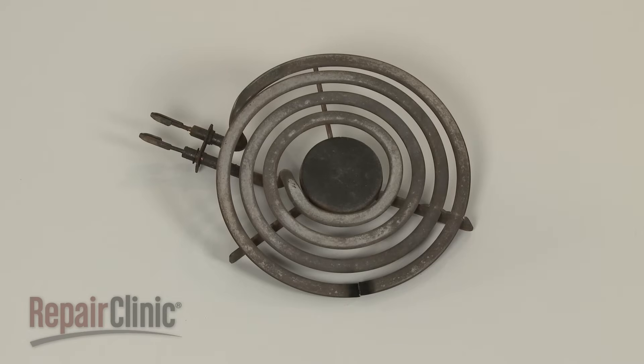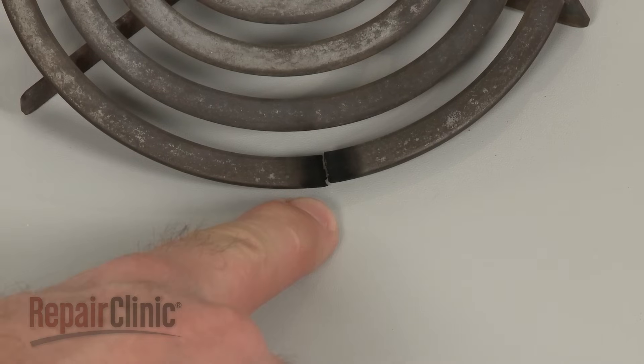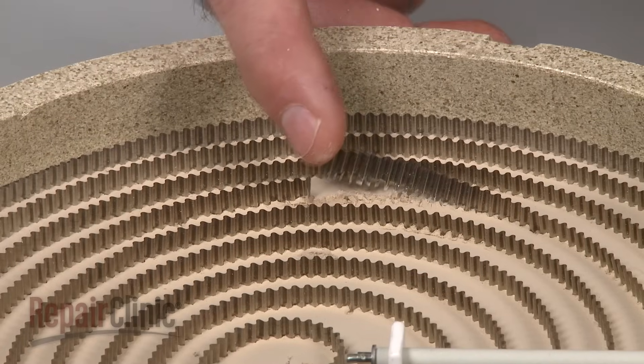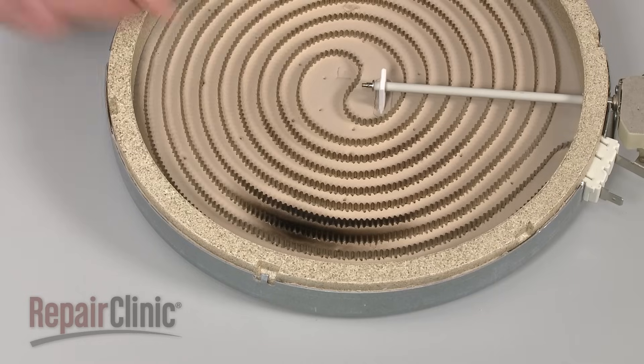If the element does not heat, then it's likely that the component has burned out. You can often determine that a conventional coil element is burned out by checking for any visible breaks or blistering. When inspecting a smooth top radiant coil, check for breaks or burn spots.